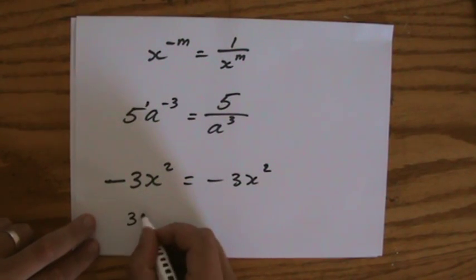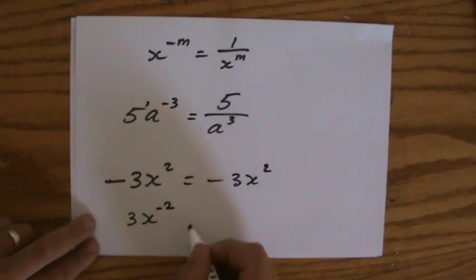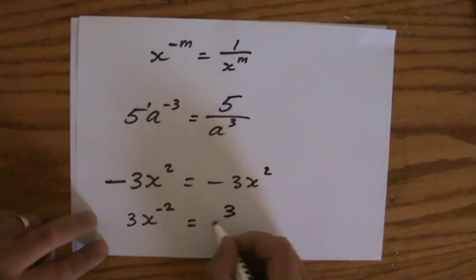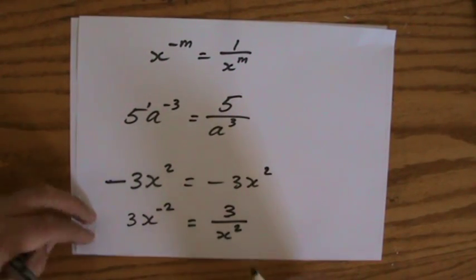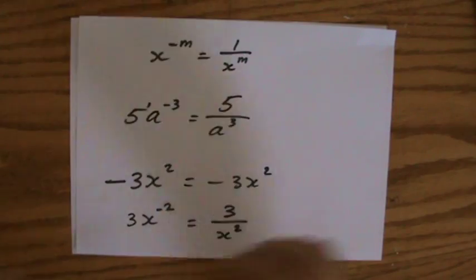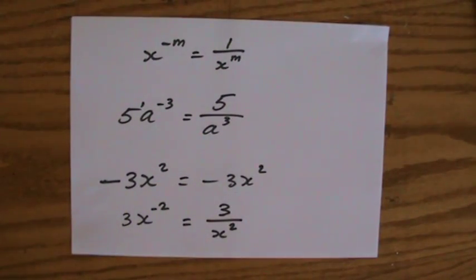And 3x to the power minus 2—now my index is negative—would be 3 over x to the power 2 in positive index notation. Negative indices.